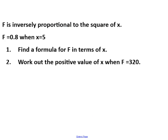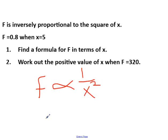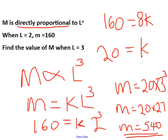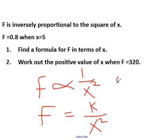The next exam question says f is inversely proportional to the square of x. When it says inversely proportional, you know it involves 1 over x squared. Written as an equation: f equals k over x squared. It says when f is 0.8, x is 5. To find k: multiply both sides by x squared, giving k equals 25 times 0.8, which is 20. So our constant of proportionality is 20.